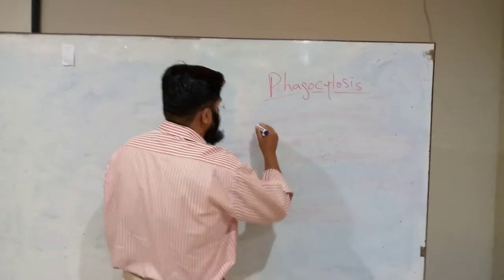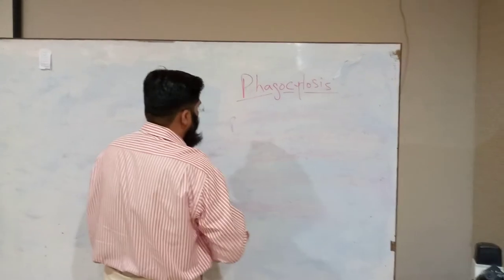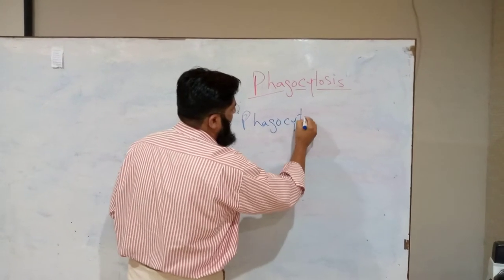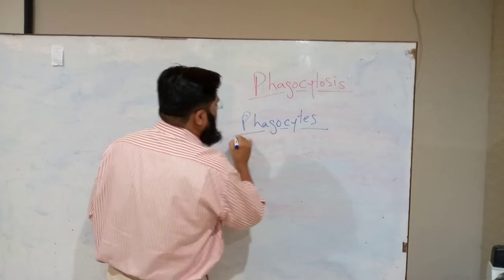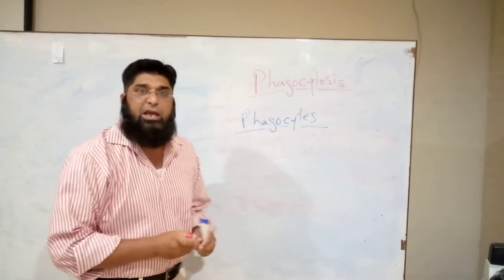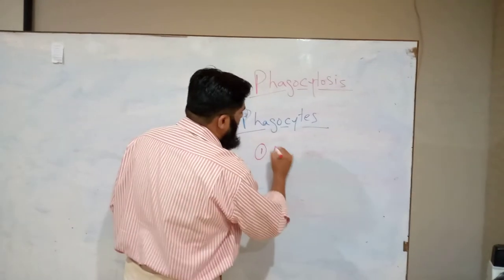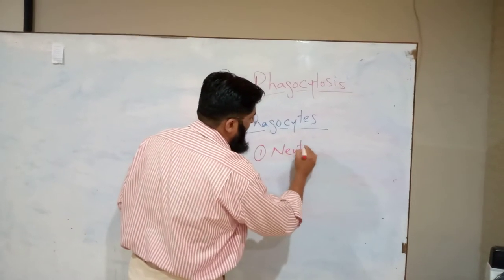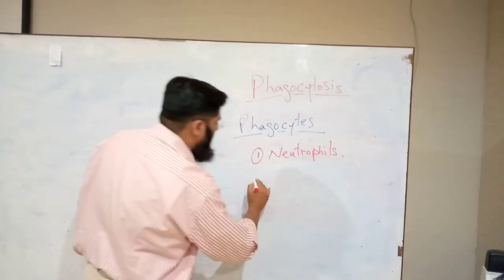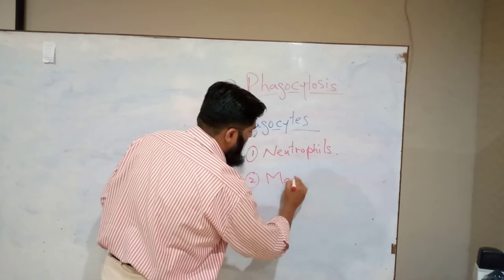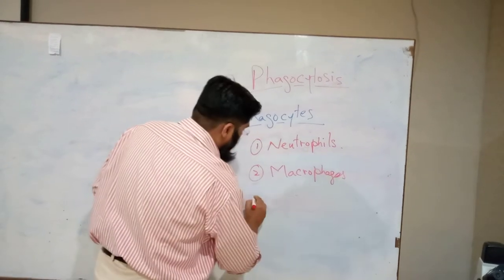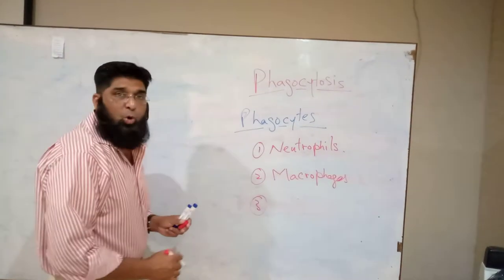There are three main types of phagocytes in our body. Number one, neutrophils. Number two, macrophages. And number three, monocytes.